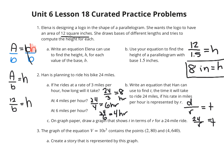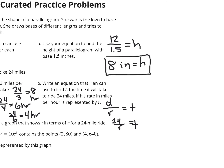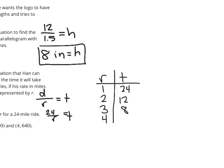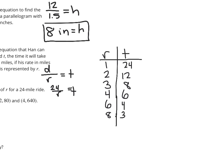On graph paper, draw a graph that shows t in terms of r for a 24-mile ride. We're going to need a table first. With r as our input and t as our output: r=1 gives t=24; r=2 gives t=12; r=3 gives t=8; r=4 gives t=6; r=6 gives t=4; r=8 gives t=3; r=12 gives t=2.